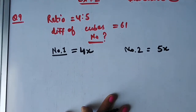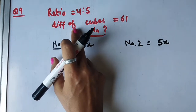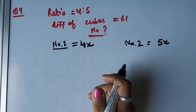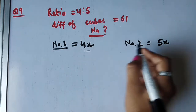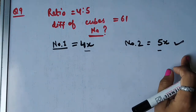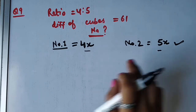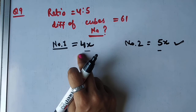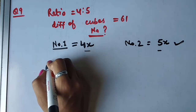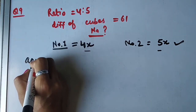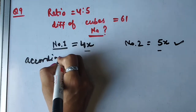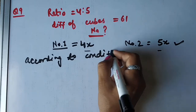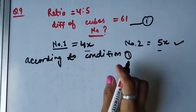4x aur 5x aa gaye hain humare dono numbers. Ab isne kya kaha — difference of cubes. Sabse pehle batao, bada number kaun sa hai — 4x ya 5x? 5x bada hoga, dikh raha hai. Toh bade wale mein se chote ko minus karenge. Cube nikal ke minus karna hai. According to condition likhte hain.